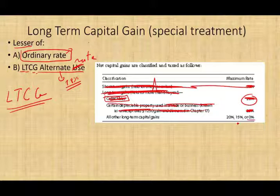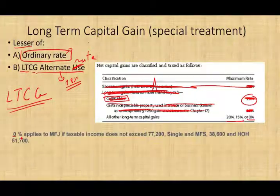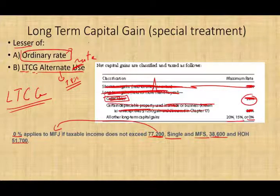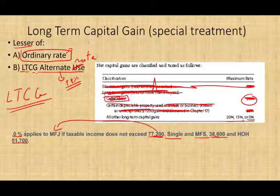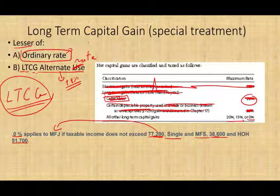If the asset is not a collectible, the long-term capital gain rates are 0%, 15%, or 20%. The 0% rate applies when your taxable income does not exceed $77,200 for married filing jointly, $38,600 for single or married filing separately, or $51,700 for head of household. Simply put, if your taxable income is below these thresholds, you pay no tax on long-term capital gains — the government rewards you for holding the asset longer than a year.